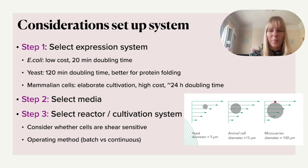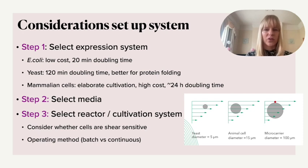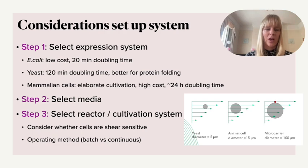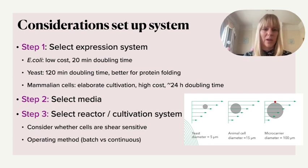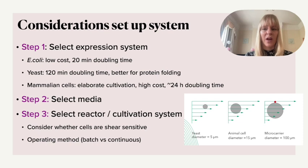Yeasts have a slightly lower doubling time but are still relatively fast and low cost, and their protein folding is closer to mammalian cell lines. Finally, mammalian cell lines such as CHO cells are well established but the cultivation process is more elaborate, much higher cost, and the doubling time is much longer — so you produce much less biomass. However, because mammalian cells are similar to our body, protein folding will be similar, making them important for certain recombinant proteins.